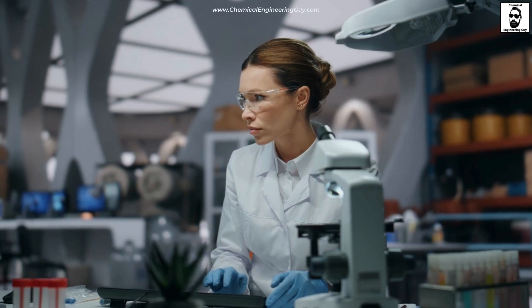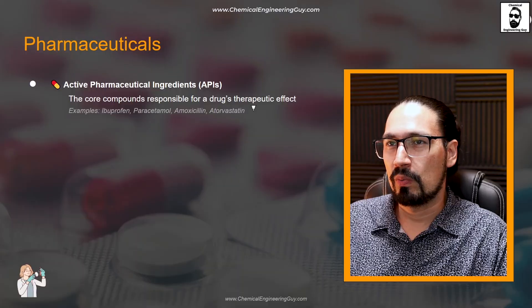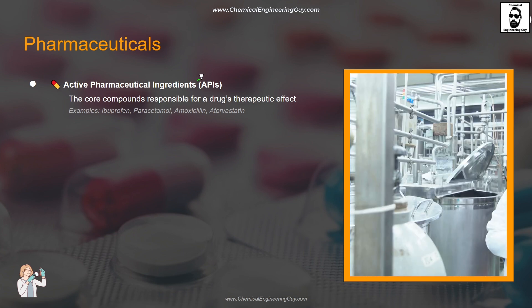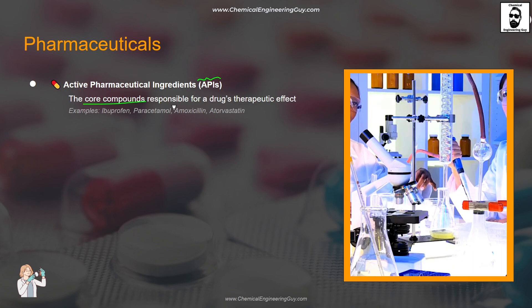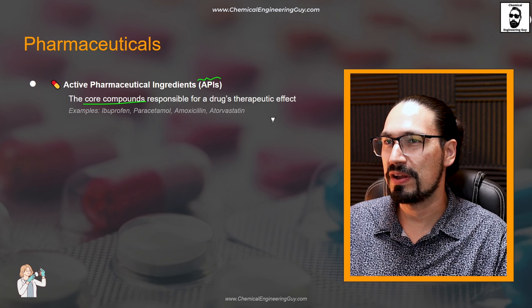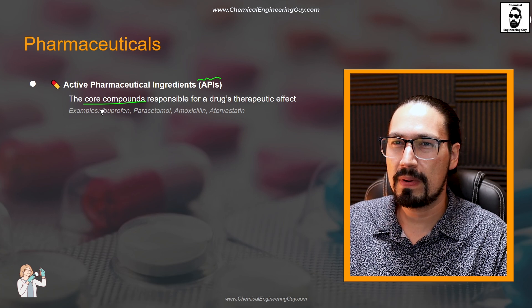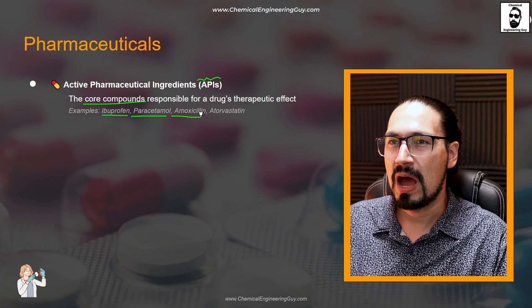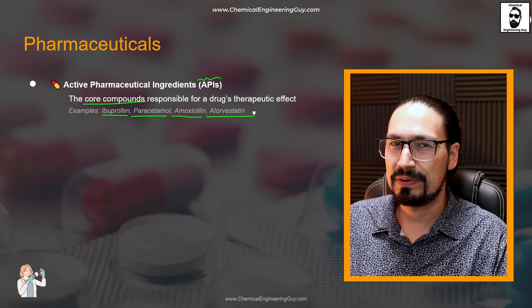Let's talk about pharmaceuticals and medicines. This can go from the actual active ingredient to the pill, to the liquid, or to the emulsion you may be taking. We're going to focus on the active pharmaceutical ingredient, the API. These are the core compounds responsible for the actual drug therapeutic effect. We're talking about things such as ibuprofen, paracetamol, amoxicillin, aspirin, and such.